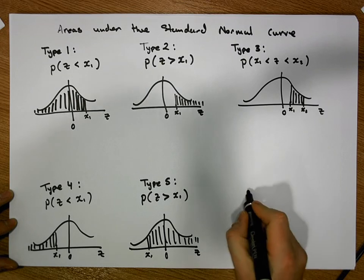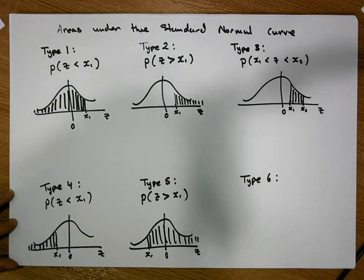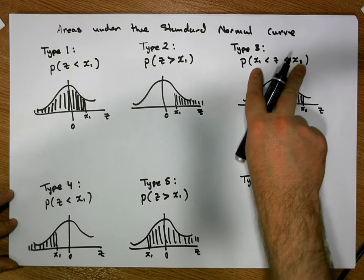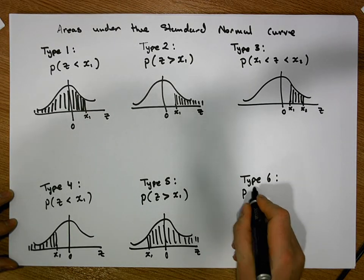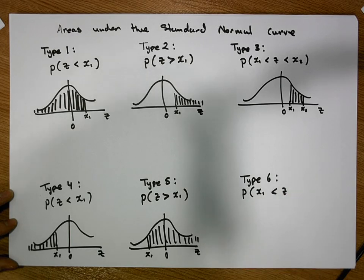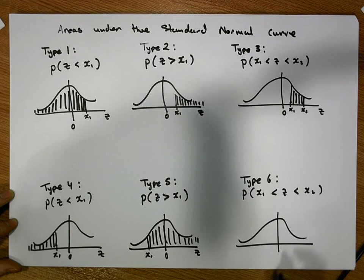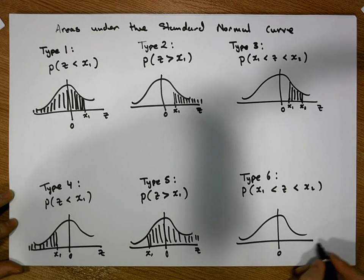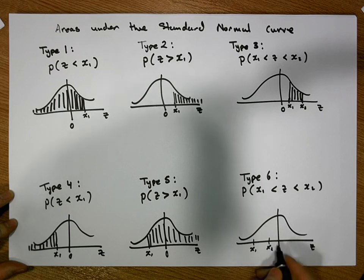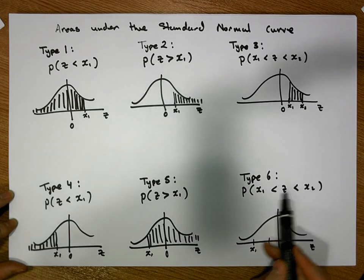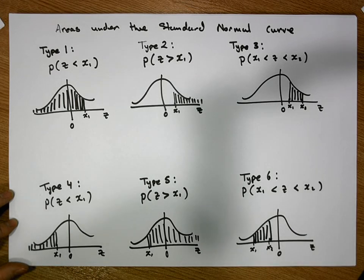Then we have type 6 probabilities, where we're given two bounds similar to the type 3 probabilities, but in this case both bounds x1 and x2 are negative values. We're interested in the probability of observing a z score that's greater than x1 and less than x2. The curve is centered on zero, x1 and x2 are both to the left of zero, and we're being asked for the area between those two values.